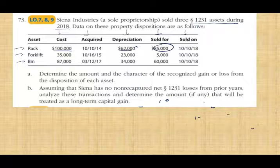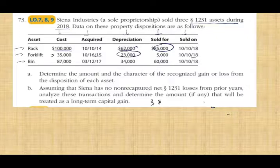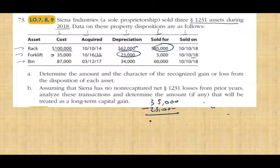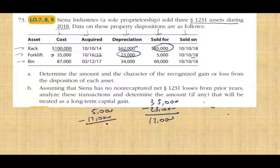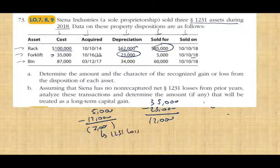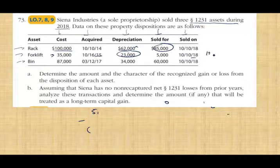For the forklift: cost $35,000, depreciation $23,000, basis is $12,000. Sold for $5,000. $5,000 minus basis of $12,000 gives a loss of $7,000. This is a Section 1231 loss.